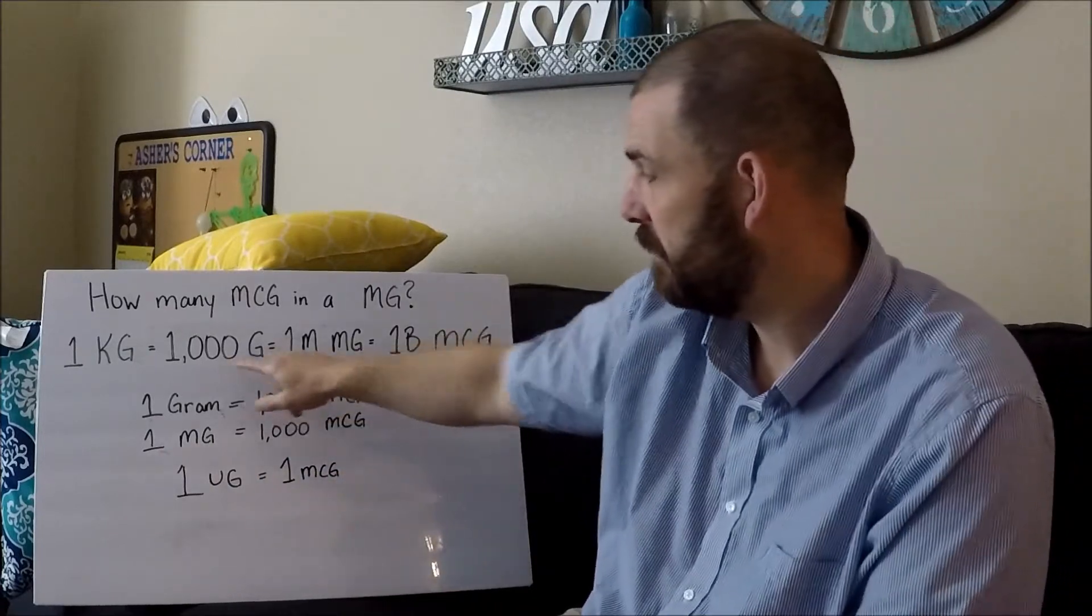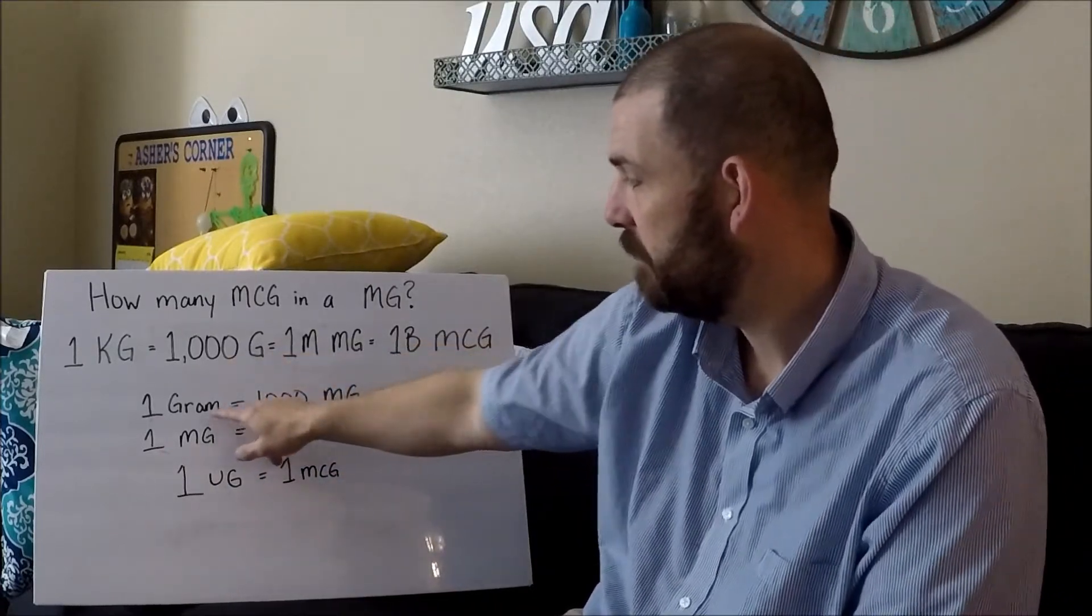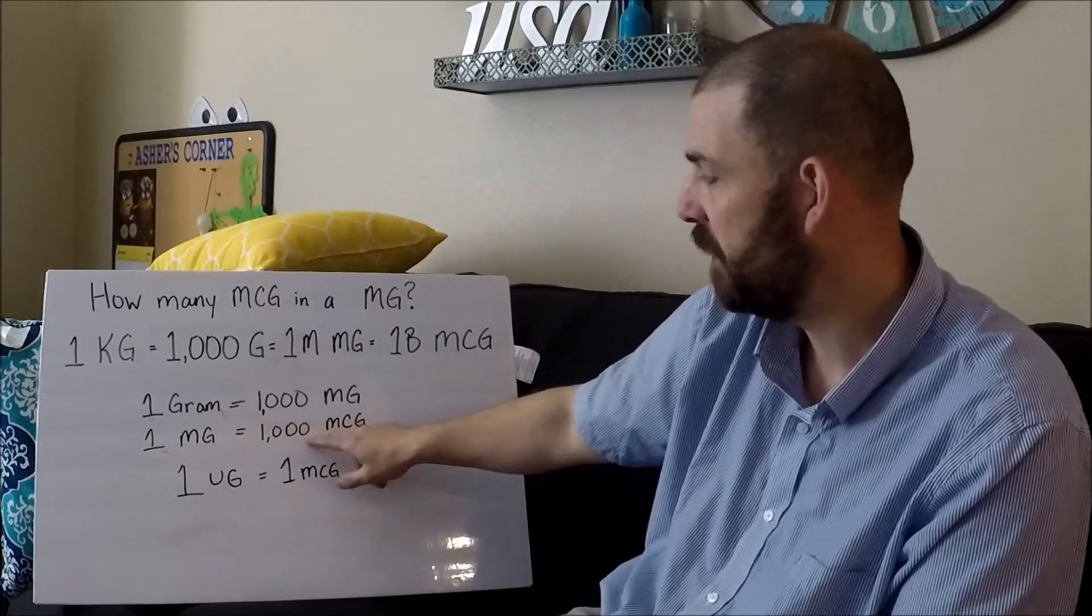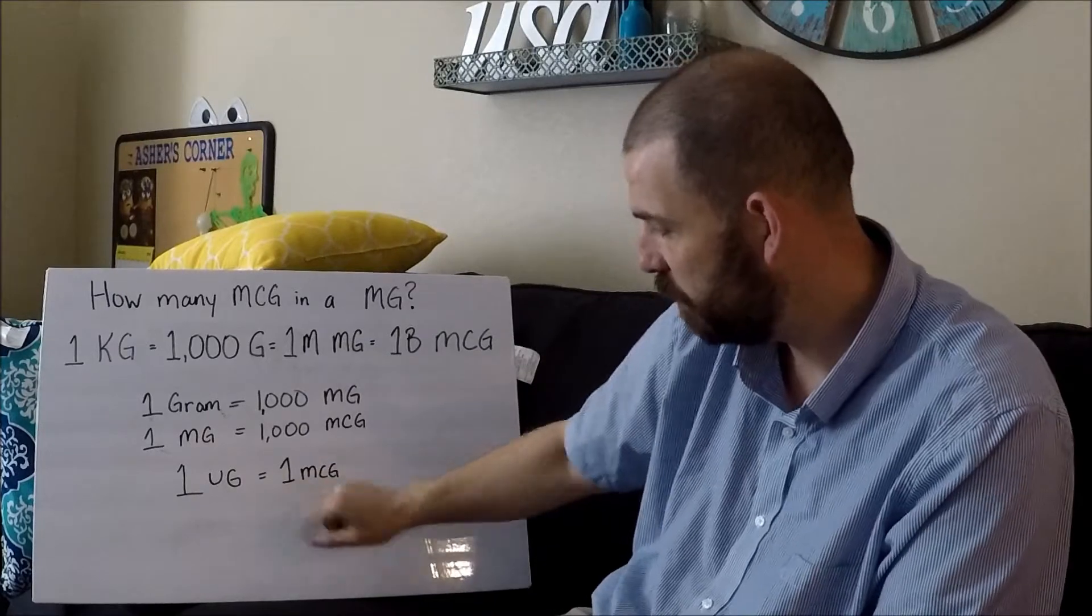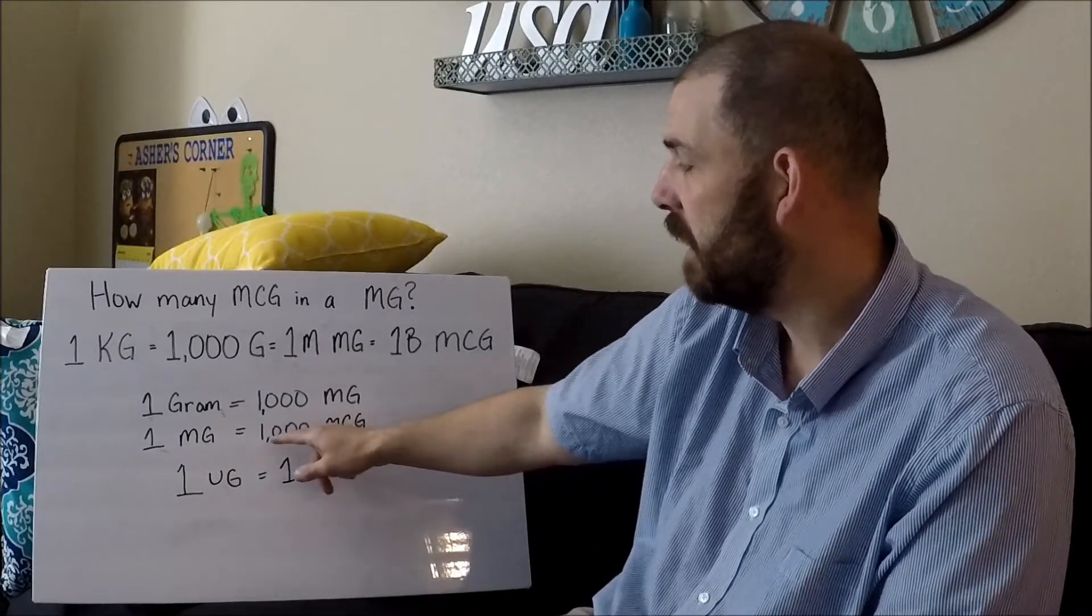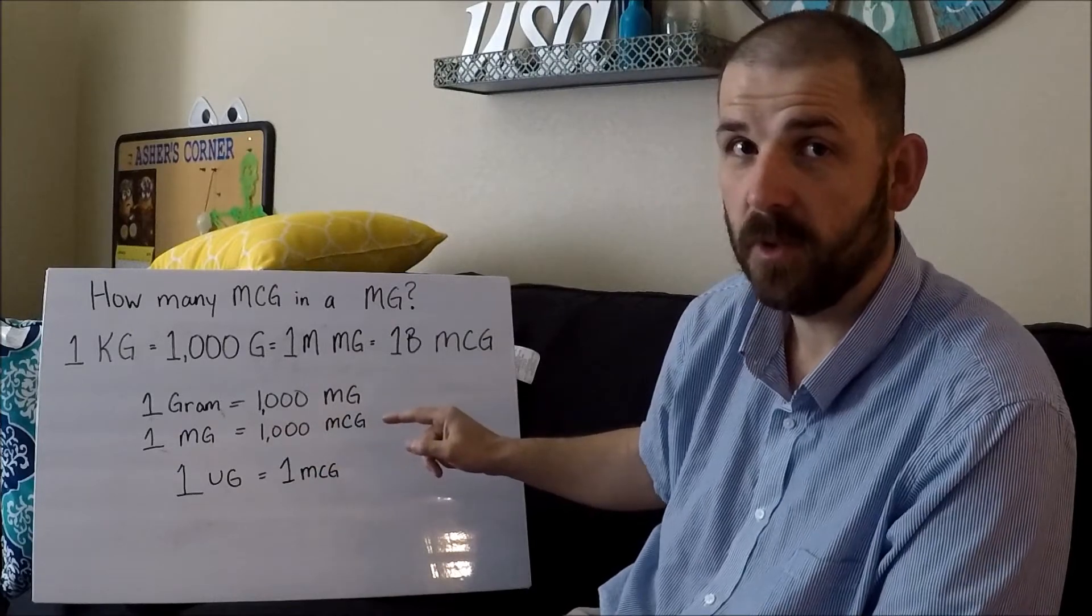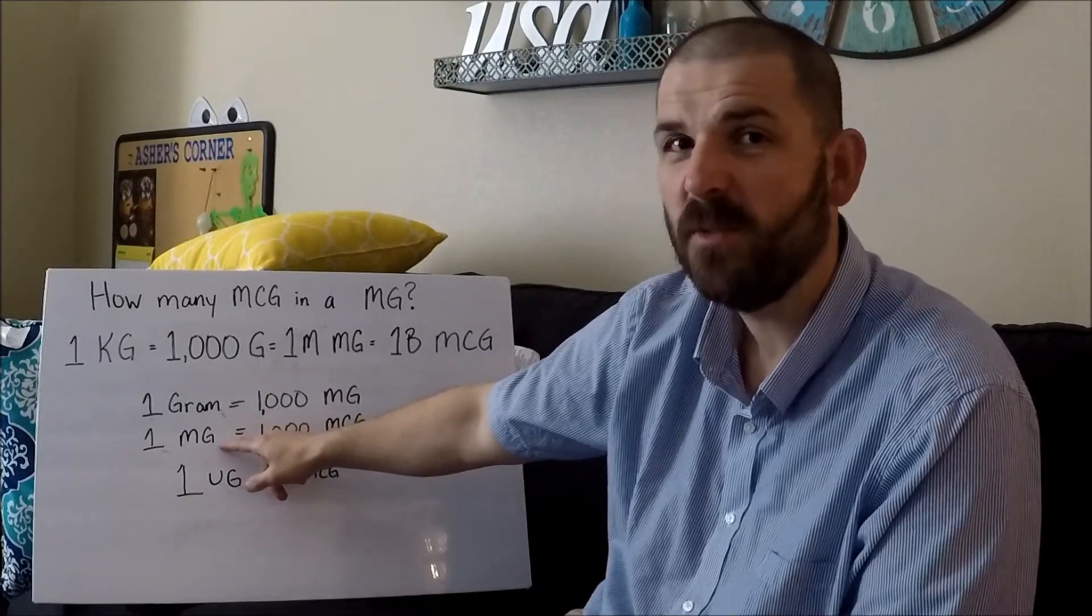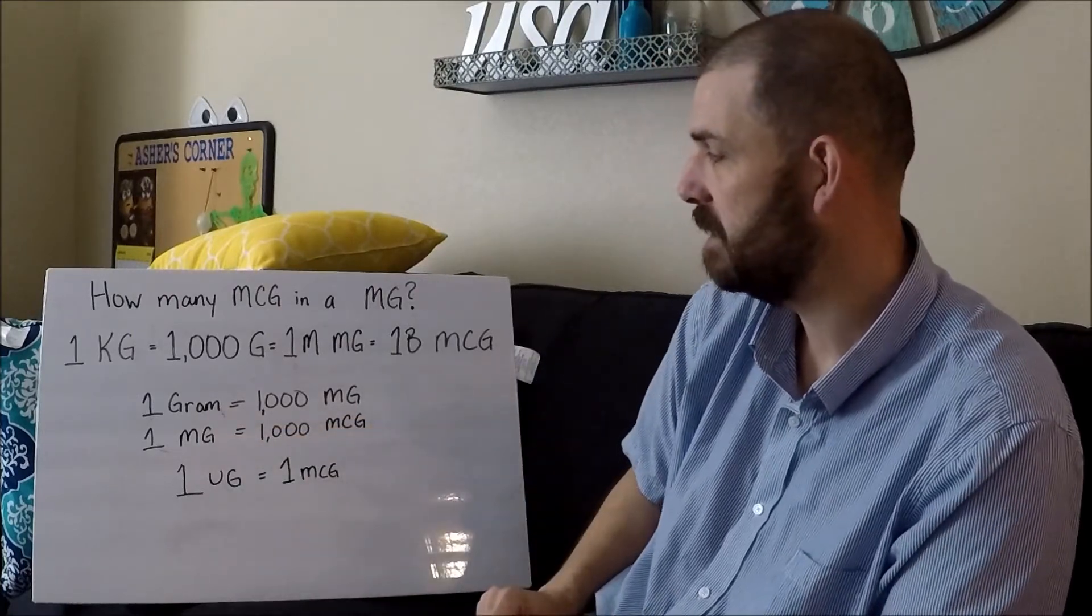So the way that the math works out on that is that 1 gram is 1000 milligrams, 1 milligram is 1000 micrograms or 1 UG is 1 microgram. So if you're looking at something that is 150 microgram requirement, it's actually only 0.15 milligrams, a very tiny, tiny amount.